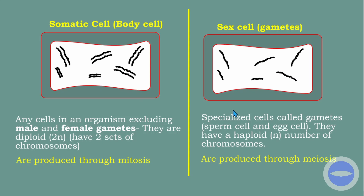In sex cells, we have only one set — this is because of the process called meiosis. Meiosis has halved the chromosome number. Sex cells are specialized cells called gametes — sperm cells and egg cells — and they are haploid. Haploid is represented by n (n number of chromosomes), and diploid is represented by 2n (two sets of chromosomes). Somatic cells are produced through mitosis, while sex cells are produced through meiosis.